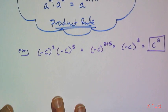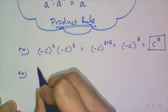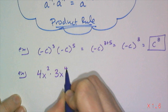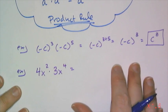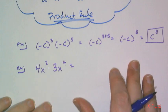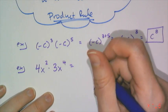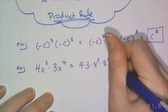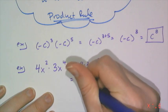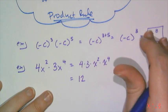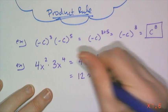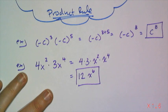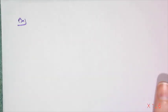I can fancy things up slightly by putting more than just the base in there, like having 4x squared times 3x to the fourth. To simplify this, I first have to put together things that can be multiplied using the commutative property of multiplication. So I get 4 times 3 times x squared times x to the fourth, and 4 times 3 is 12, but x squared times x to the fourth is x to the sixth by the product rule, giving 12x to the sixth power.